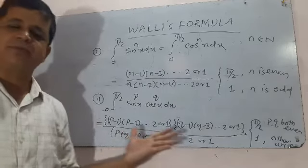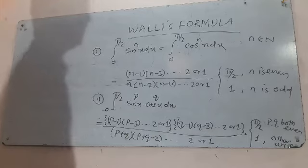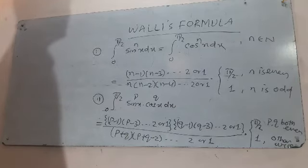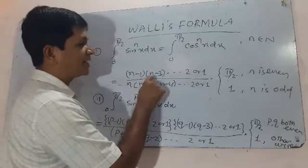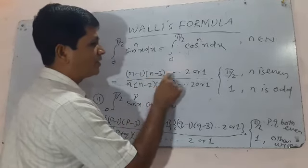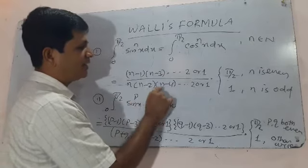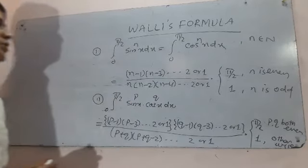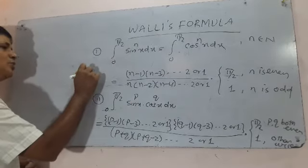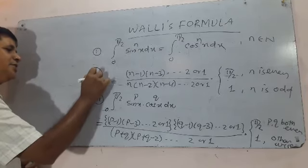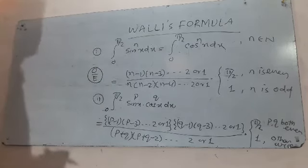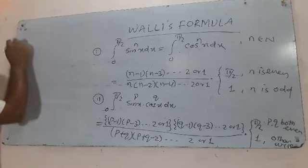Here is a trick for Wallis' formula: in the numerator, write the odd numbers (decreasing), and in the denominator, write the even numbers (decreasing). Remember: odd divided by even — this is the trick for Wallis' formula.